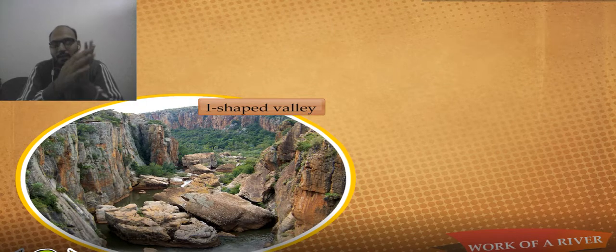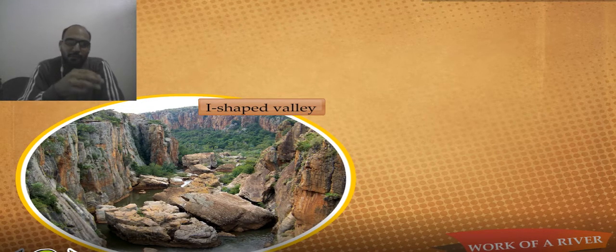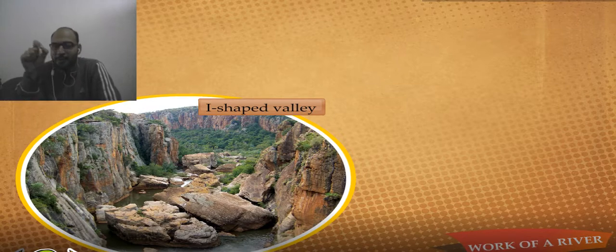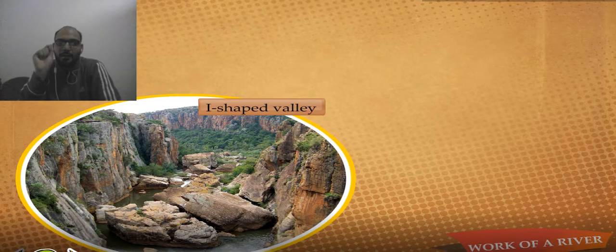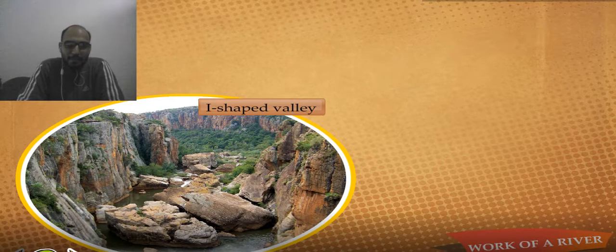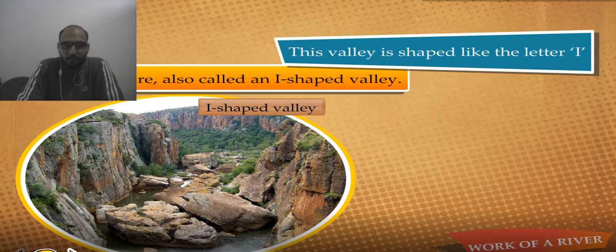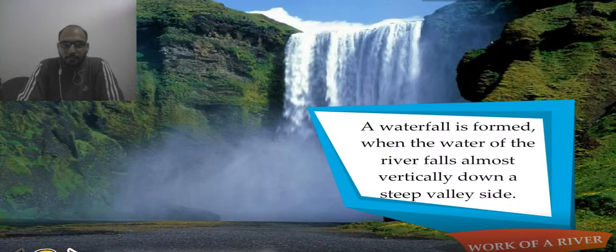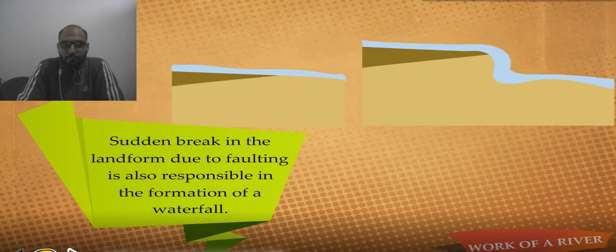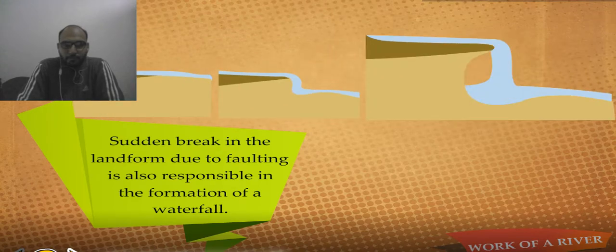Due to the erosional activities, the wearing away of rocks occurs, as well as the making of very deep valleys. V-shaped valleys are generally found within mountains where a river flows through that area. This valley is shaped like the letter V, and therefore it is called a V-shaped valley. A waterfall is formed when the water of the river falls almost vertically down a steep valley side. A sudden break in the landform due to faulting is also responsible for the formation of a waterfall.